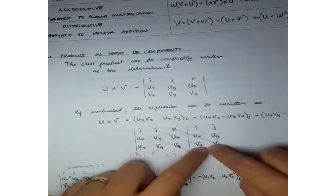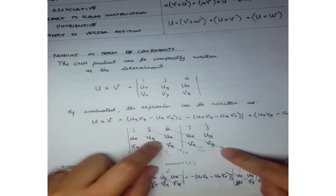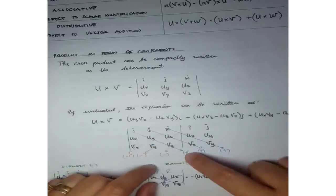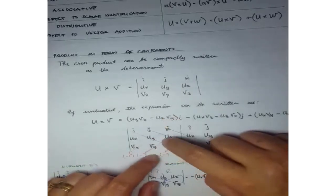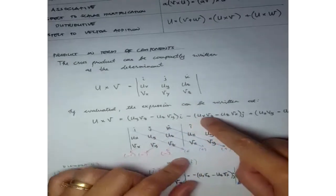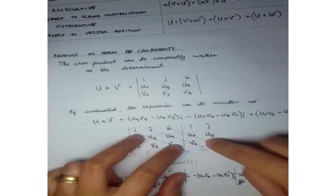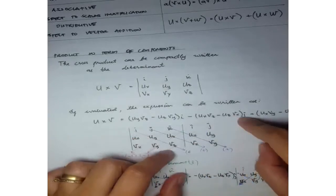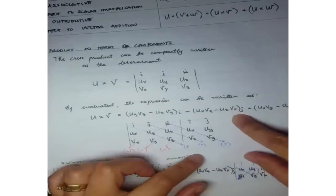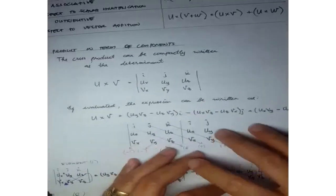When evaluated, the expression is written as: (Uy·Vz − Uz·Vy) in the I direction, minus (Ux·Vz − Uz·Vx) in the J direction, plus (Ux·Vy − Uy·Vx) in the K direction.